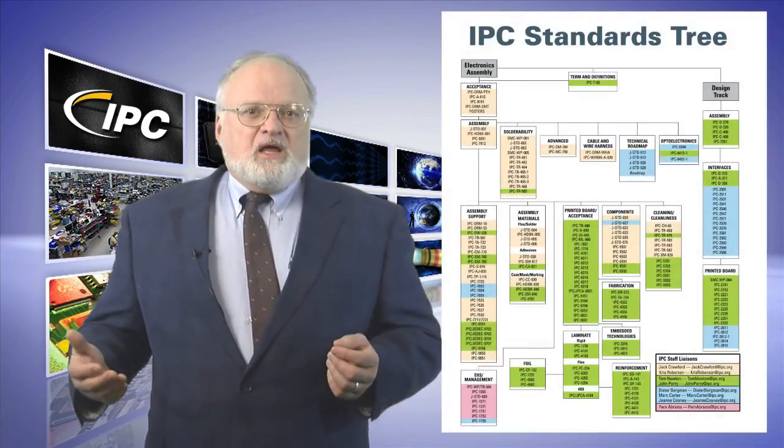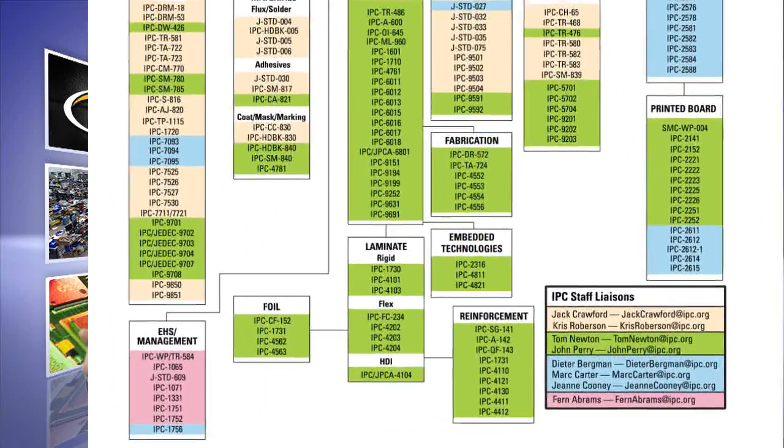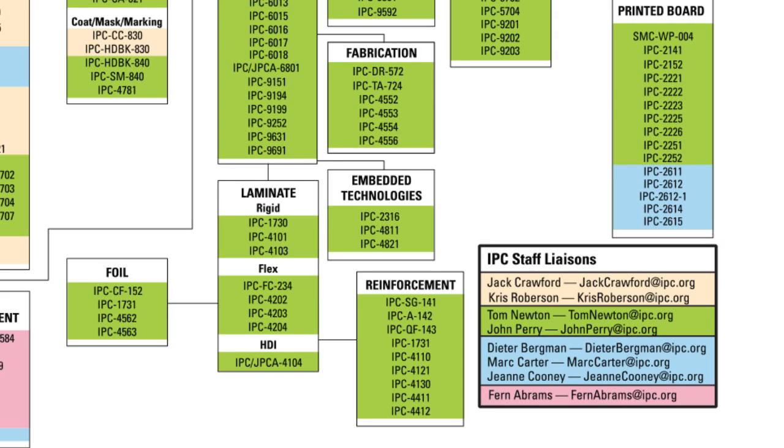I should say that some of the older standards that haven't seen a major update recently will still be in an older three digit system. And some of the joint standards, like those that we've worked on in cooperation with multiple standards organizations, as well as some of the older white paper technical discussions, don't fit in the system very well. But through the color coding on the spec tree, you can always identify which of IPC's technical staff you should go to for help.